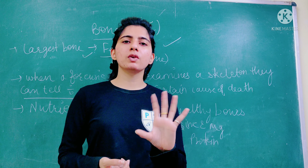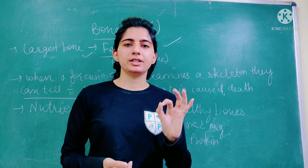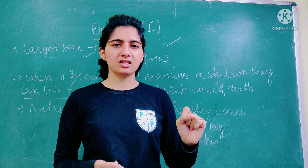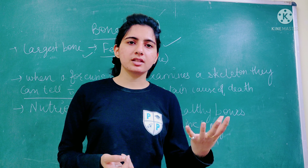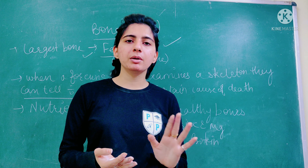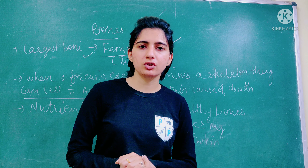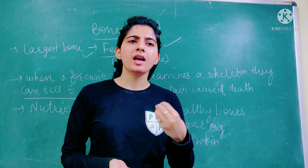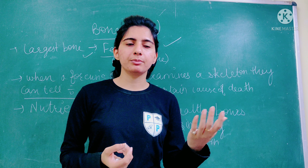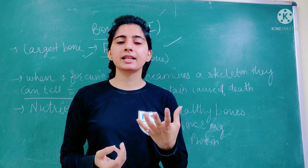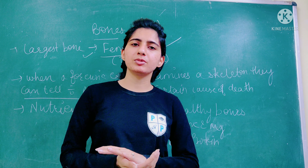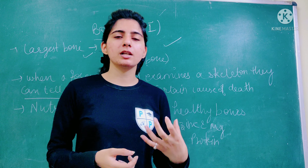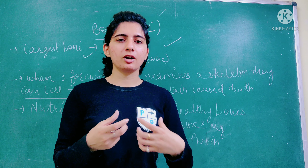The next thing a forensic expert can determine is the certain cause of death. For example, if there is a bone fracture near vital organs like the heart or lungs, the forensic expert can identify that and determine the cause of death.